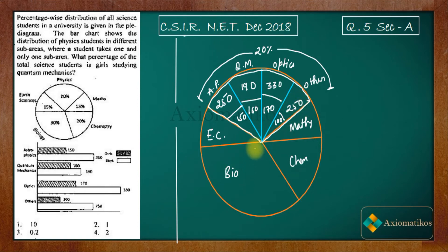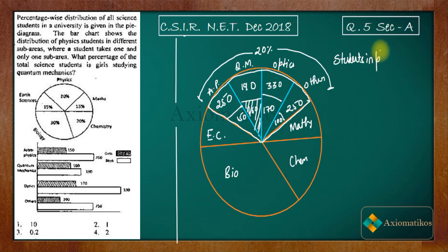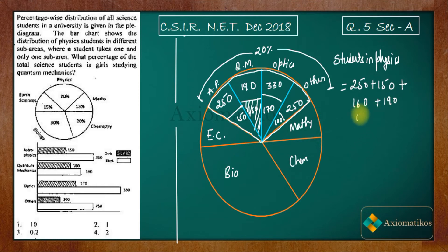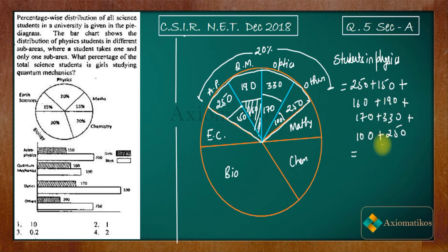What we have to do is find the percentage of quantum mechanics girls from the total students in the pie chart. First, our aim is to calculate how many students are in the physics section. In physics: astrophysics has 250 + 150, quantum mechanics has 160 + 190, optics has 170 + 330. If you add them all up, you get 1600 students in the physics section.